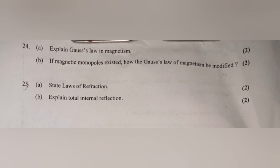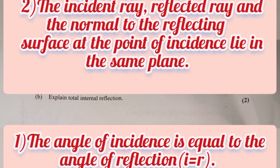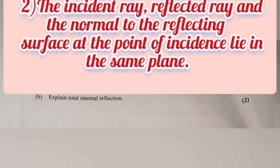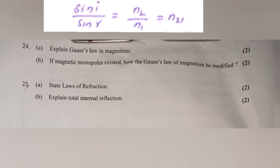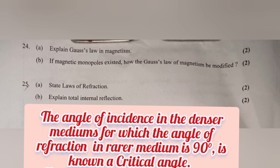Q25a: Laws of reflection: (1) The angle of incidence is equal to the angle of reflection. (2) The incident ray, reflected ray, and the normal to the reflecting surface at the point of incidence lie in the same plane. Q25b: Total internal reflection — the angle of incidence in the denser medium for which the angle of refraction in the rarer medium is 90 degrees is known as the critical angle.